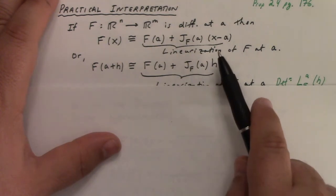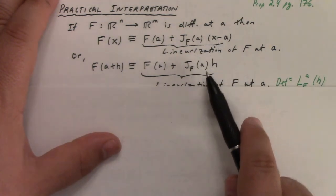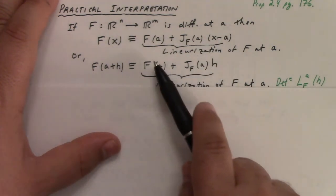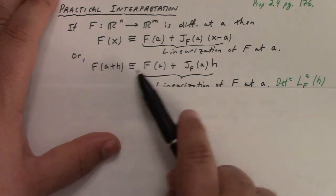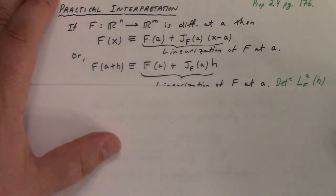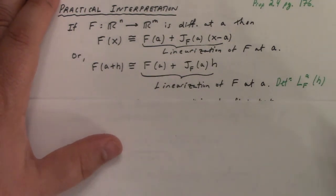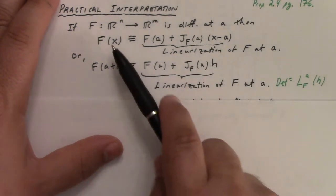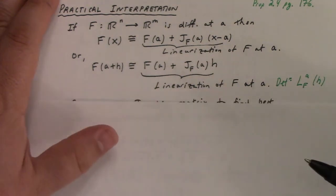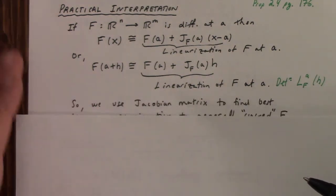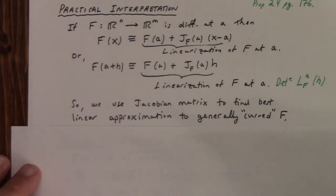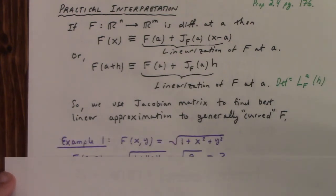So you could think about, this is, the second formula comes from the first with x equal to a plus h, so the a's cancel. I mean, however you want to look at it. I'll just admit that I'm a little bit ambiguous in what I mean by linearization, because I either mean this or I mean that. All right. Anyway.